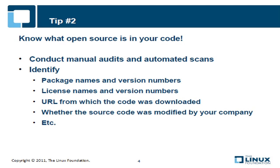If you don't know what open source is in products your company distributes, you won't know what open source licenses are involved and what obligations need to be satisfied. But discovering what's in your code can be surprisingly difficult to achieve. Most products today are not developed from scratch — they're comprised of components that come from many sources, both internal and external to the company, often evolving from legacy products that have been around a long time. Many products today consist of more than a million lines of source code, so it's not surprising that no single individual or even team knows what's in the code and where it all came from.